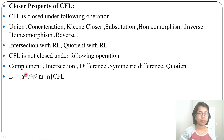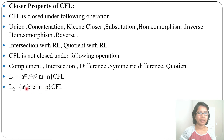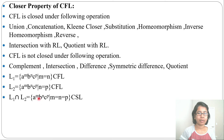Let's take an example. Let L1 = a^m b^n c^p where m = n, meaning the number of a's equals the number of b's followed by any number of c's — this is a context-free language. Let L2 = a^m b^n c^p where n = p, meaning any number of a's followed by equal numbers of b's and c's. The intersection of both languages is a^m b^n c^p where m = n = p, meaning the number of a's equals b's equals c's. This is not a context-free language; it is a context-sensitive language. So the intersection of two context-free languages is not context-free — it is context-sensitive.